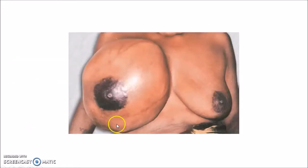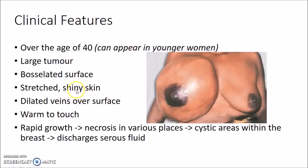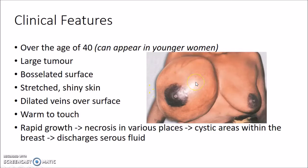This picture shows a Phyllodes Tumor on the right breast. Phyllodes Tumor usually occurs over the age of 40 years, though it can appear in younger women as well; the most common age of presentation is over 40 years prior to menopause. It is a large tumor with a lobulated surface. Since it is a very large tumor, the skin over the tumor will be stretched and shiny, with dilated veins visible over the surface.